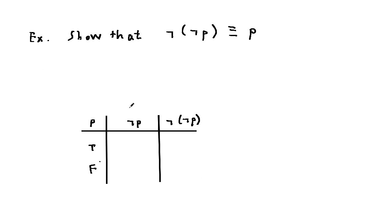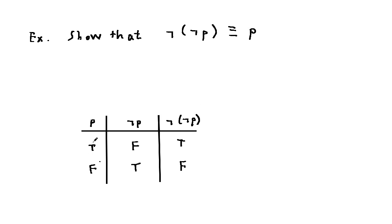Let's form the truth table. Here we have P — it can either be T or F. Now let's find the truth values for NOT P: this is F since that's just the opposite of T, and here we have T, the opposite of F. Now we want to look at NOT NOT P. We look at the column for NOT P and find NOT NOT P. Notice the columns for NOT NOT P and P are the same — it is just T and F. So therefore NOT NOT P is logically equivalent to P.